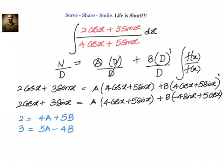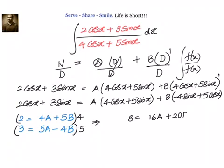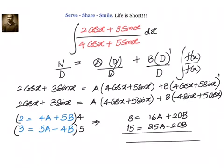We can use any linear equation method — either cross multiplication or elimination. We will use the elimination method. We multiply the first equation by 4 and the second by 5 to find the values of A and B. That gives us 8 equals 16A plus 20B, and 15 equals 25A minus 20B. Now let us add them: we get 23 equals 41A, so A equals 23 divided by 41.